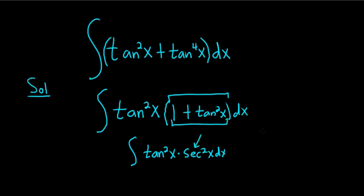And now it's easy, because we can let u be equal to the tangent of x. And that means that du is equal to secant squared x dx.